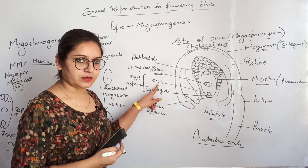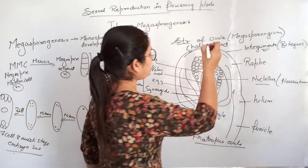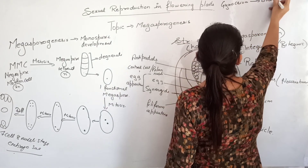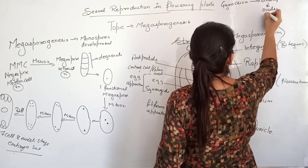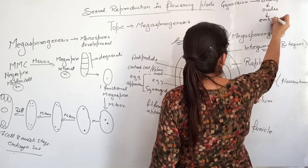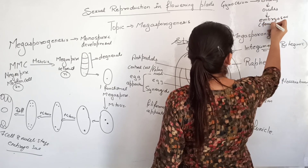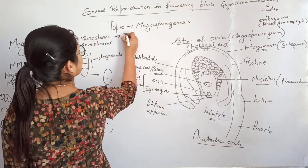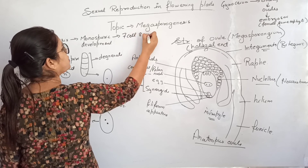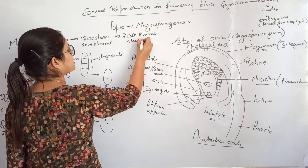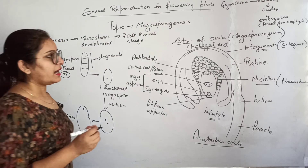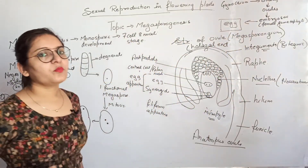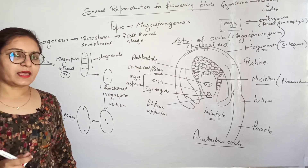So in a megasporangium, which is the ovule, a 7-cell 8-nuclei embryo sac is formed, containing the female gamete — the egg. To summarize: the gynoecium has stigma, style, and ovary. The ovary contains ovules, and each ovule has an embryo sac representing the female gametophyte with a 7-cell 8-nuclei stage, where one cell is the egg — the female gamete. This is how megasporogenesis occurs in angiosperms.